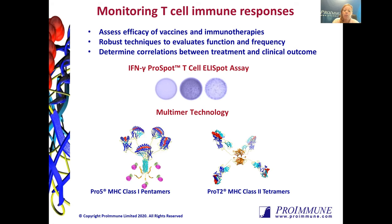There are several different types of immune monitoring tools available, so it's very important to choose a robust assay that will provide the best measure of immune reactivity and ultimately help determine correlations between the treatment and clinical outcome. I'm going to be describing two technologies that allow you to look at both function and frequency of CD8 and CD4 T cells: our interferon gamma ELISpot T cell assay and our multimer technology, consisting of our Pro5 MHC class 1 pentamers and ProT2 MHC class 2 tetramers. I'll provide case study examples of how they've been used to monitor immune responses in gene therapy and immuno-oncology programs.